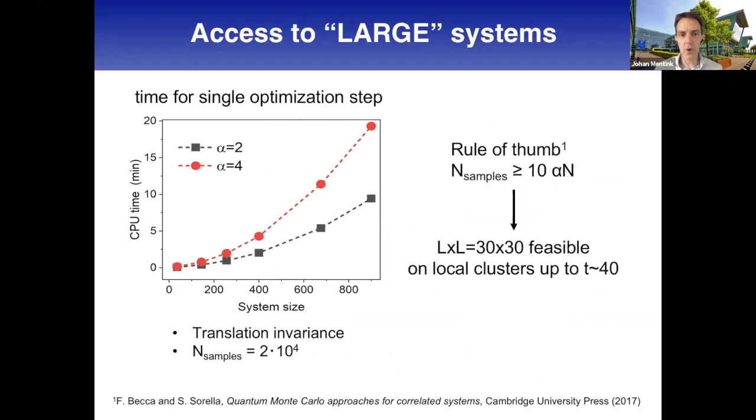Some comments on accessibility of large systems. Here's an example of what we did to check how far we could go. As expected, we have quadratic scaling of computation time with system size - this is just the computation time for a single optimization step for a typical number of samples we use. This is lower than in the earlier Ising model talk where sample size was a factor of 10 larger. What we use as a rule of thumb gives us stable time propagation.